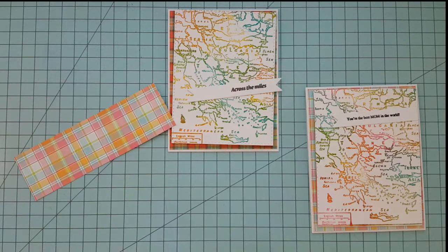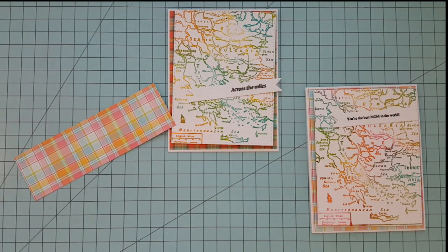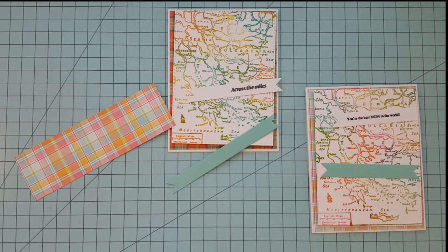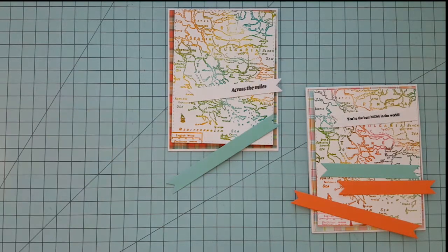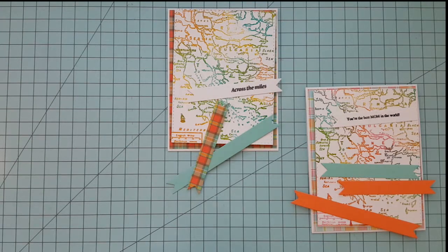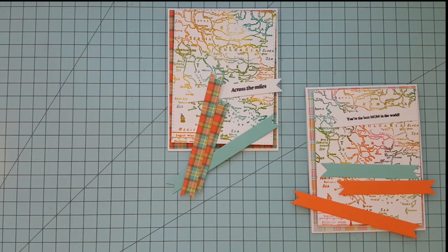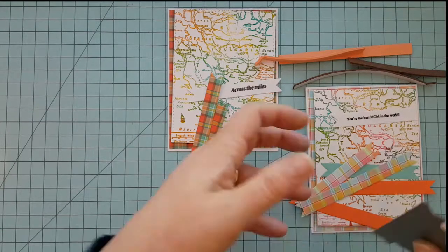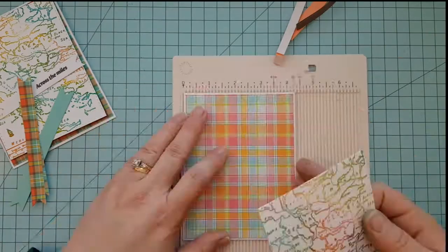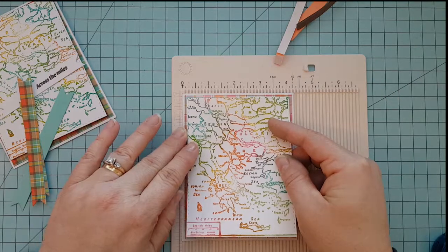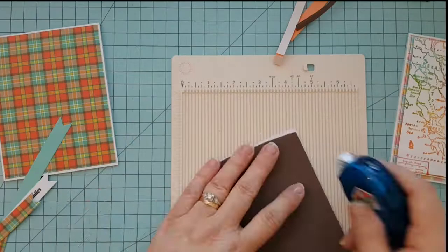You can even use the 3D mounting foam tape instead of the fun foam. So I decided that my sentiments needed a little bit more oomph to them. So I die cut some aqua and coral. I also die cut some plaid that was left over from the plaid that we cut for our matting. You're also going to be able to use your extra fun foam. So you end up with very little scraps with this card, which is a good thing.